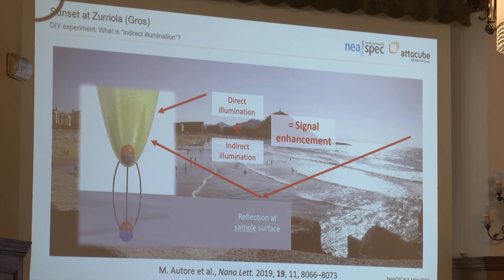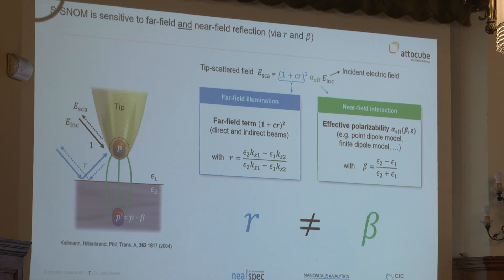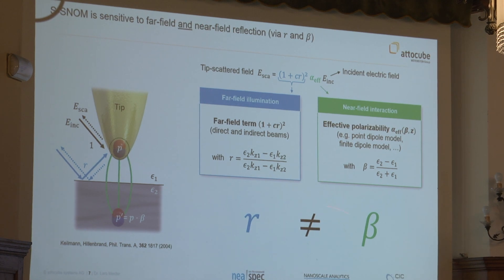So this is indirect illumination. In the expression for the scattered field, we have this alpha effective — that's near-field interaction — taking place via this beta. This is the near-field reflection coefficient. And the far-fields, they take place via far-field reflection. These two are, in general, not the same. That's very important to realize. If you want to do modeling, you need two different expressions for these.